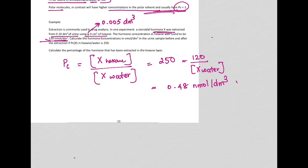This is in water. And this was in hexane concentration. Now, you need to find the concentration of the hormone in nmol per dm³ in the urine sample before the extraction. So if you add these two values here, you will get the total concentration of X. That would be total. So it would be the sum of the two, 120.48. Now, this is nmol per dm³.